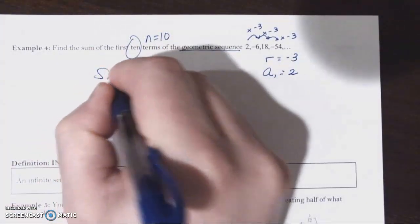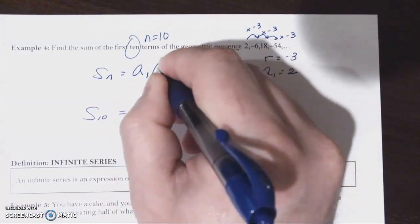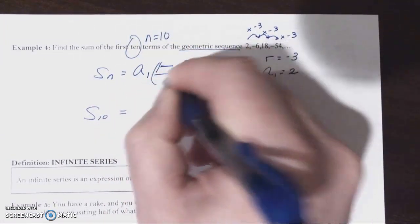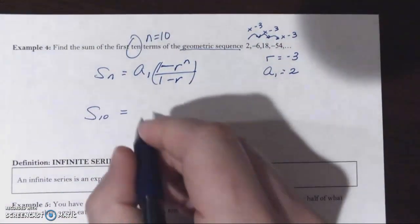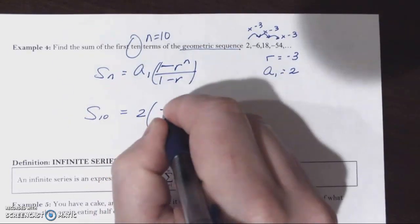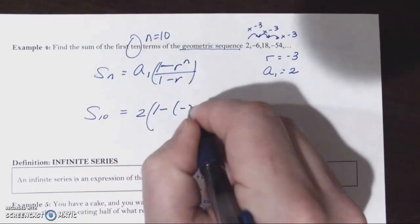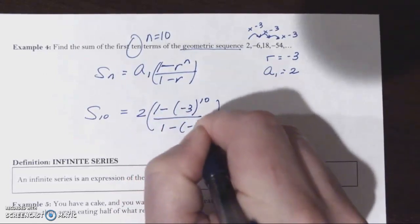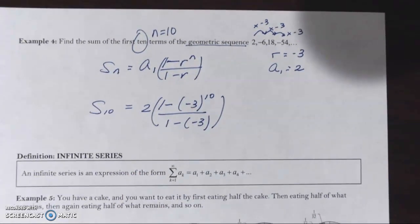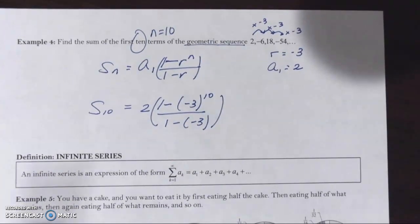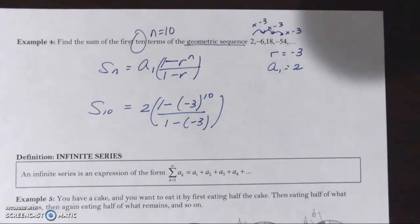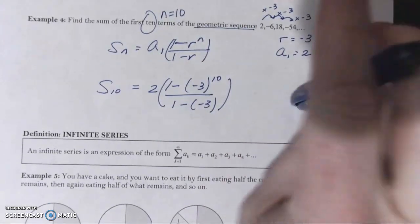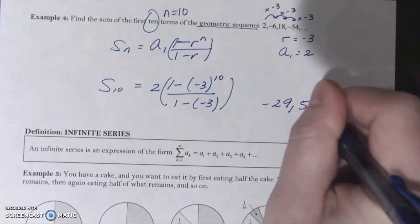The formula for the sum is the first term times 1 minus the common ratio to the nth power over 1 minus r. The first term is 2, the common ratio is negative 3 to the nth power over 1 minus r. Putting that all into our calculator, the answer is negative 29,524.